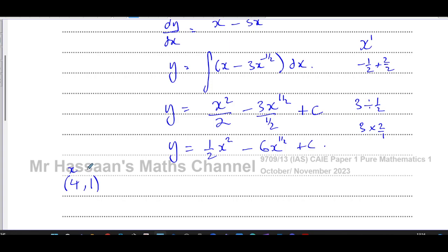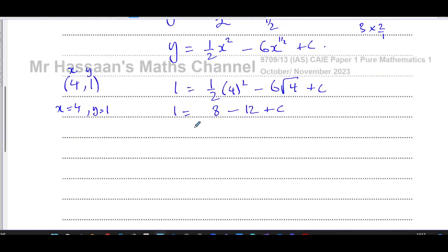Now we can find c by substituting the values of x and y from this point. The first number is always the x-coordinate, the second is the y-coordinate. Someone put x equals 1 instead of x equals 4. We replace y with 1 and x with 4. So 1 equals a half times 16, which is 8, minus 6 times 2, which is 12, plus c. So 1 equals minus 4 plus c. Therefore c equals 1 plus 4, which is 5.